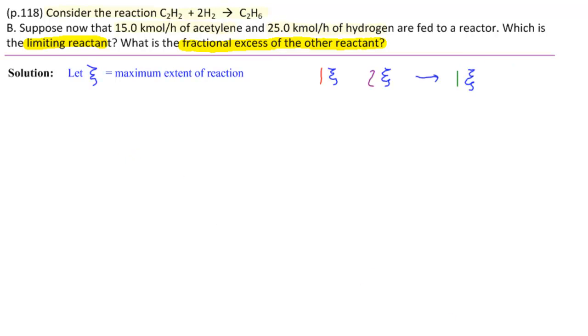And we say to ourselves, which is the limiting reactant, exactly the same way. Let's start with C2H2, which would mean that 1ξ is 15 kilomoles per hour. And we see immediately that we have rates. So we go back and add dots to indicate rates for everything. If we have 15 kilomoles per hour is 1ξ dot, that would mean that for hydrogen, we need 2ξ dot, which would be 2 times 15 kilomoles per hour, which would be 30 kilomoles per hour.